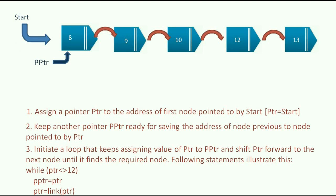As you can see, PTR is moving to the next node and PPTR stays behind. Now, PTR has moved to the third node and PPTR is at the second node. Keep on doing this until you reach the desired data which is 12.